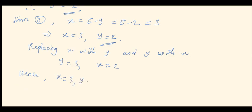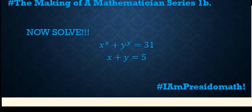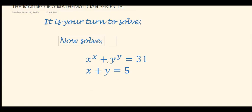Therefore the full solution is: x equals 3 and y equals 2, or x equals 2 and y equals 3. That is the final answer to this simultaneous equation. Now it is your turn — try solving a similar equation using this method. The solution will be available in the next four days. Thank you very much. I am PersidoMath — the Making of a Mathematician.